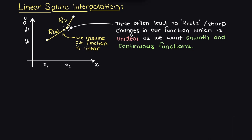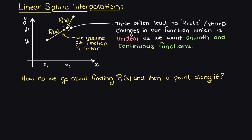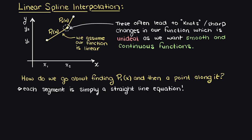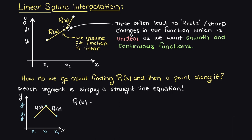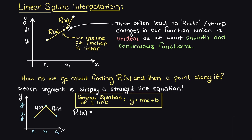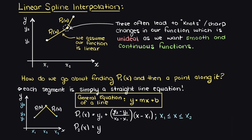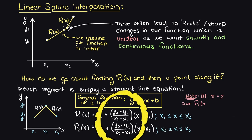Now that we have an idea of what linear spline interpolation looks like, how do we go about actually finding an interpolating function such that we can find an output along this line? In a linear spline interpolation function, we have a piecewise function where each linear spline is a simple straight line equation with the domain of the bounding data points. Any general linear spline interpolation between two points can be written as the equation of a straight line, where this term is simply our slope, m.